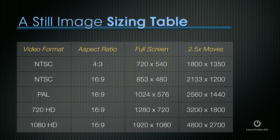For 720 HD, use 1280 by 720. And for 1080 HD, make it 1920 by 1080. If all you want is a really high quality image that doesn't move — you're not zooming or panning — then set it to the numbers based on the full screen column.